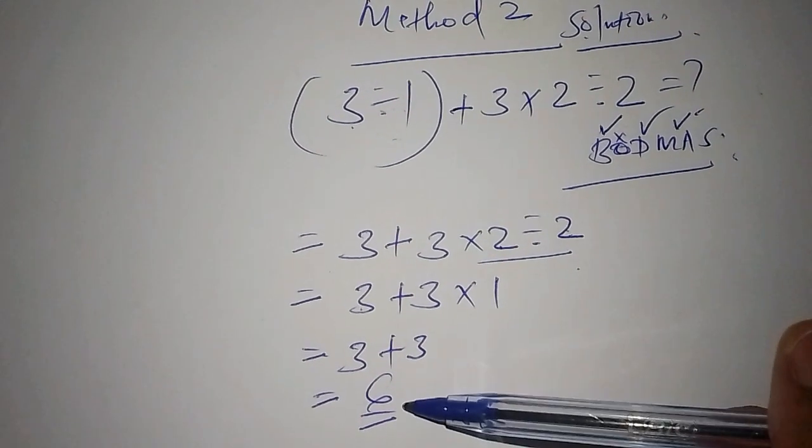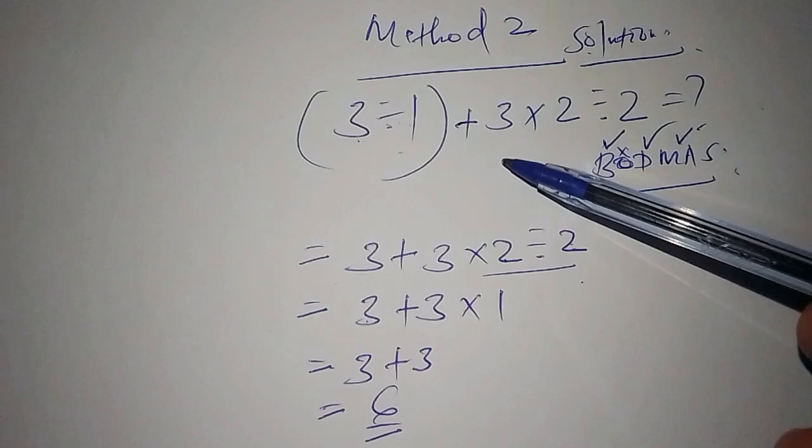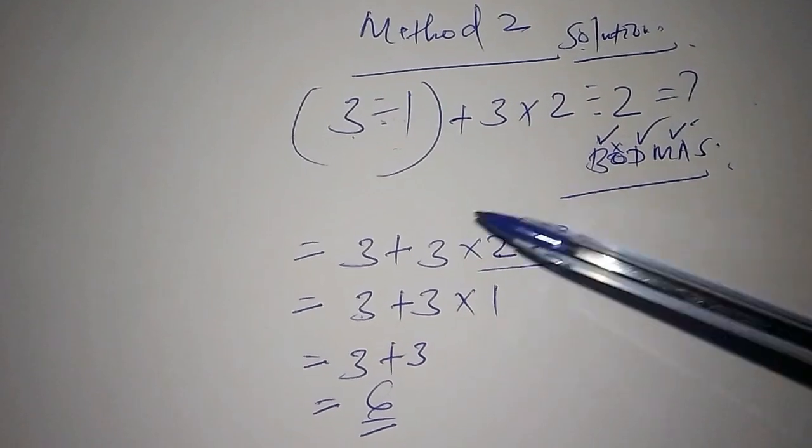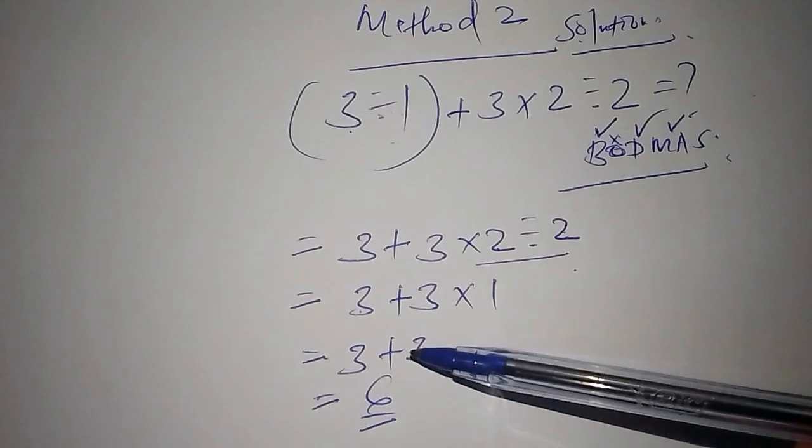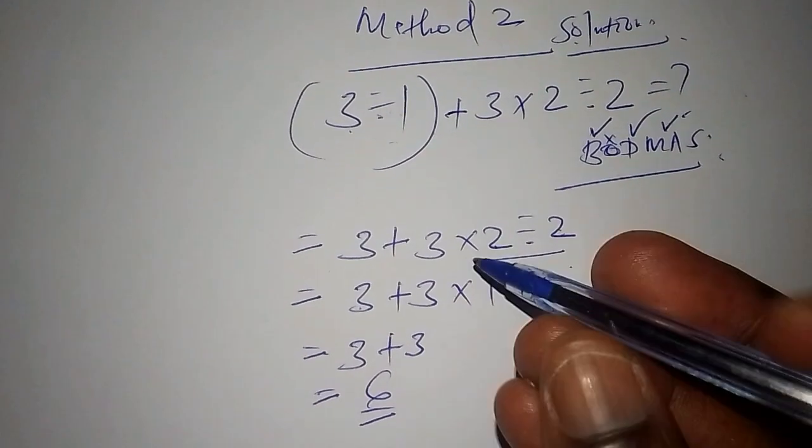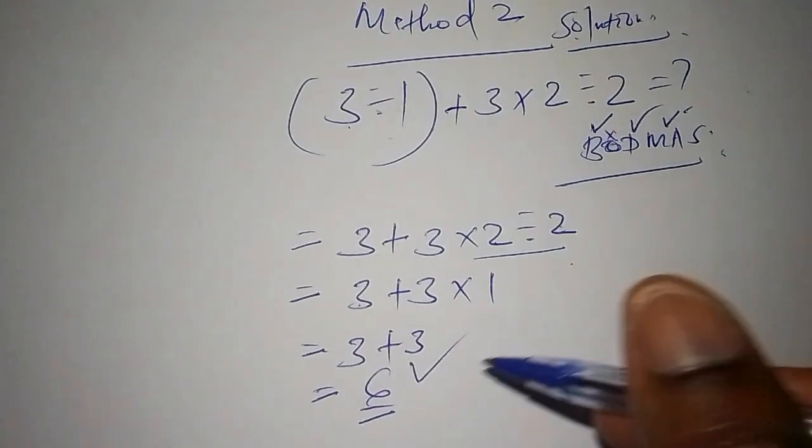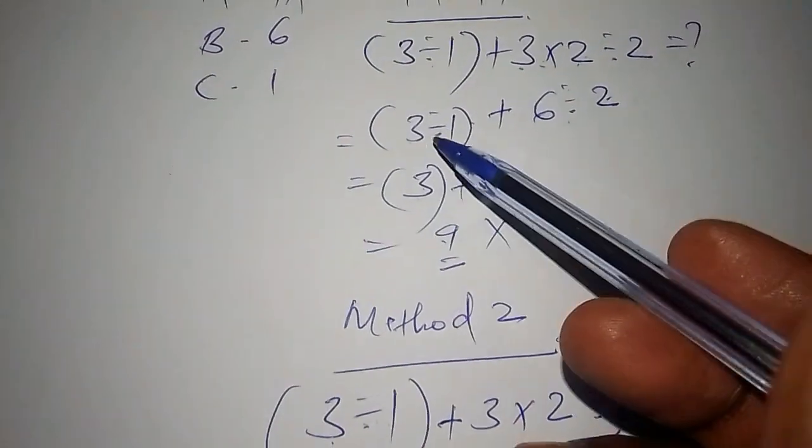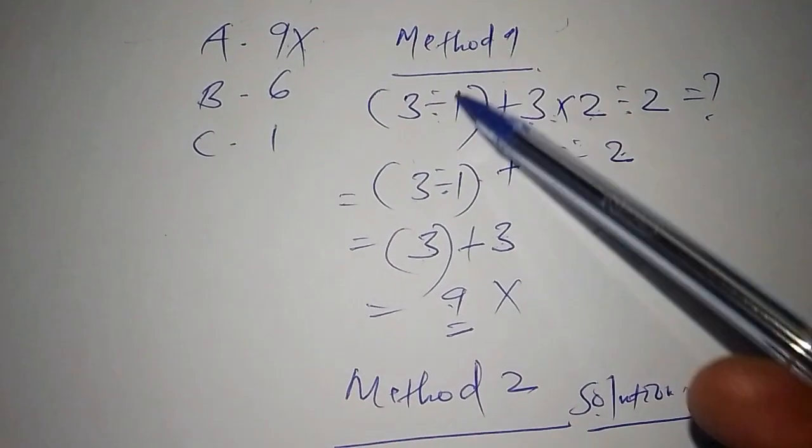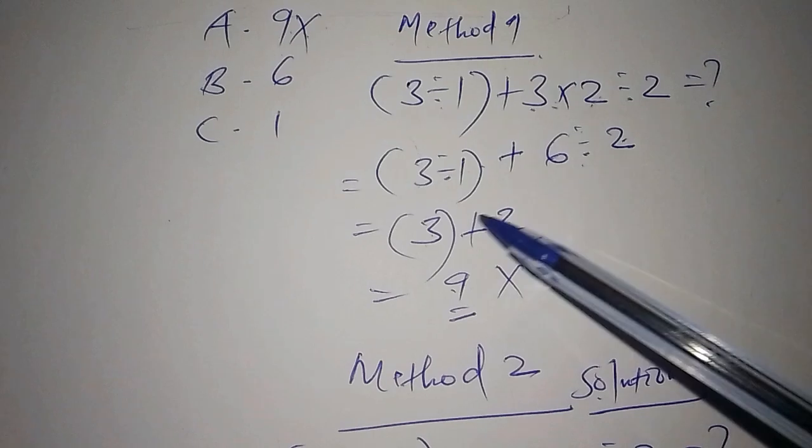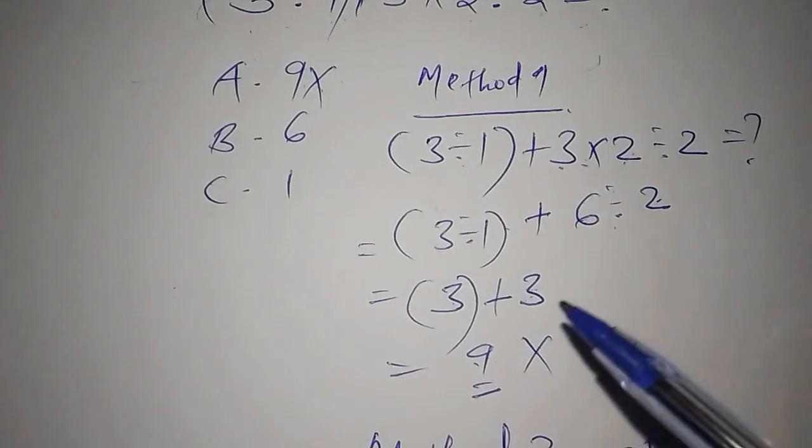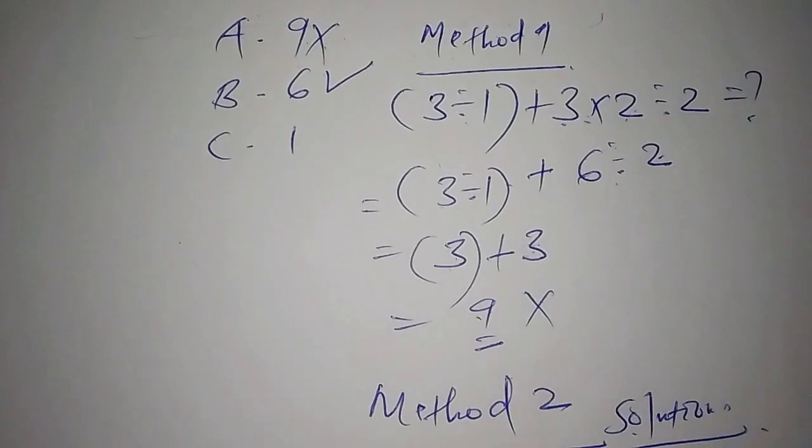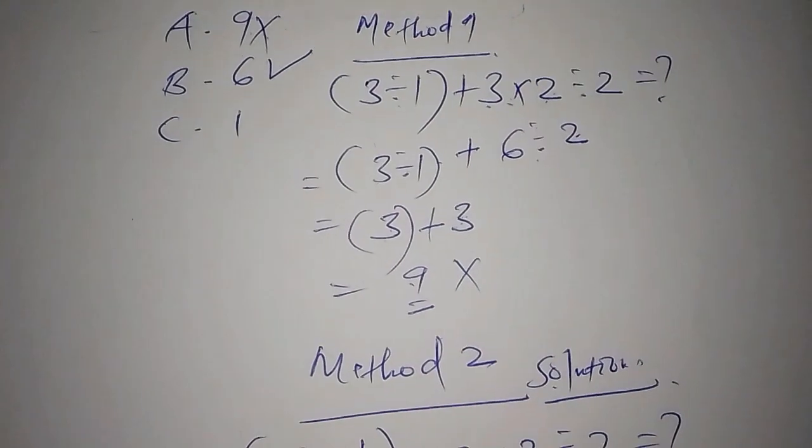Based on the answer that has been got, you see that BODMAS has been used. There's a smooth order of operations that have been undertaken. This Method 2 is why we say that 6 is the correct answer, different from Method 1 which was 9. When we come to our choices, choice B picks the correct answer, the answer is 6.